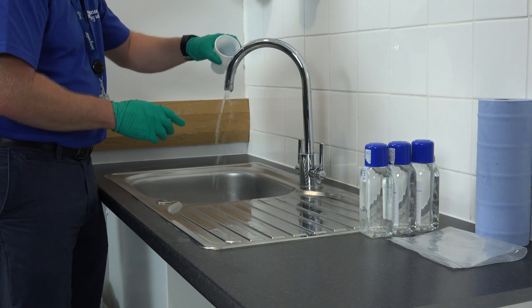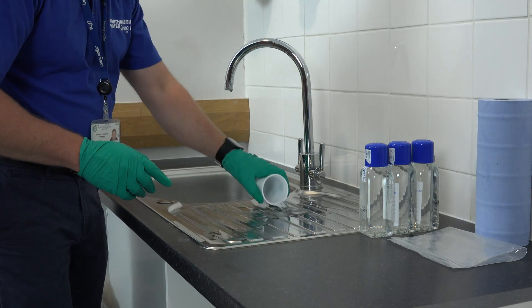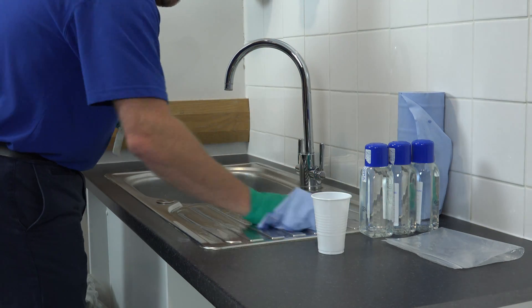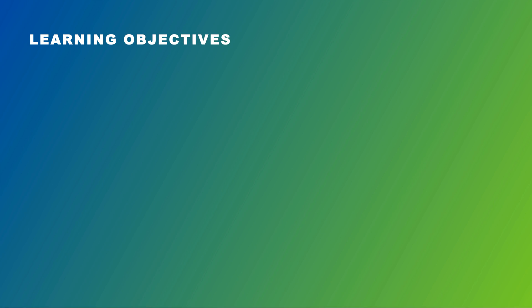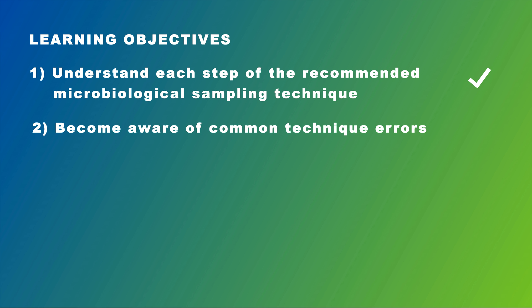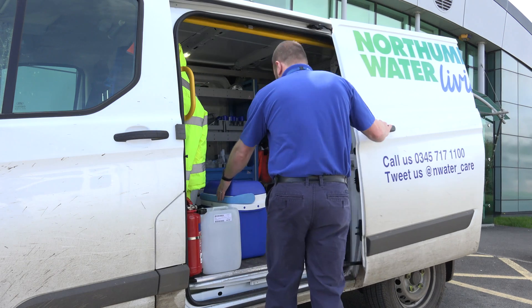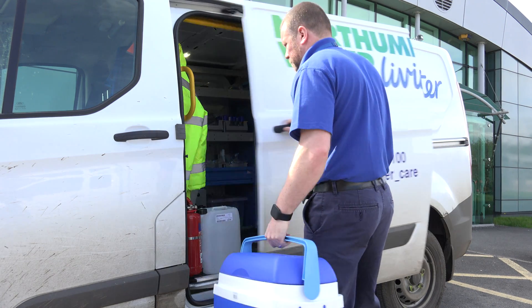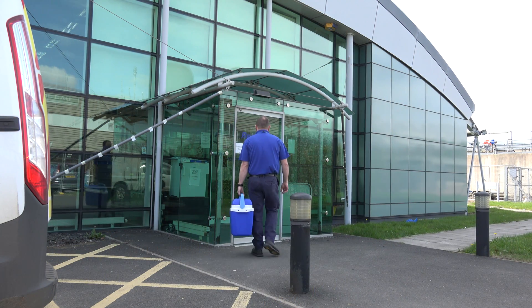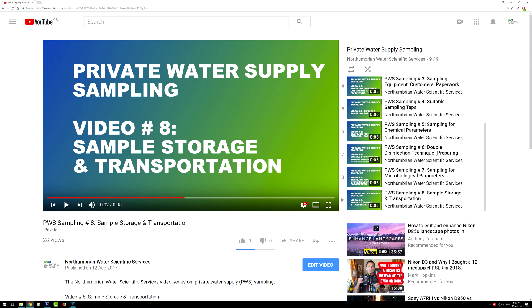Before leaving the customer's property, check that you've rinsed all residual disinfection solution from the outside of the tap and that you've thoroughly cleaned up any spillages. This brings us to the end of this video. We've explored each individual step of the recommended microbiological sampling technique and highlighted common technique errors that can affect the quality of your samples. After sampling, care must be taken to store and transport the samples under conditions that safeguard their integrity while they're en route to the laboratory. This will be explored in our next video, video number 8, which focuses on sample storage and transportation.